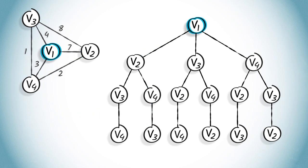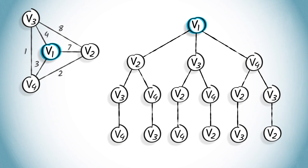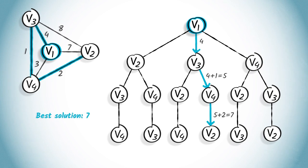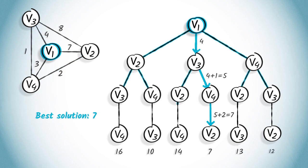The search continues until all possible solutions have been evaluated. The output of the algorithm is solution v1, v3, v4, v2, which has the lowest possible cost of 7. A total of 6 solutions have been evaluated in this depth-first search.